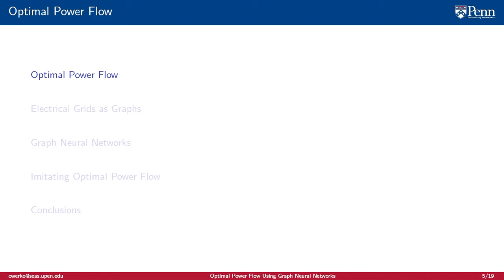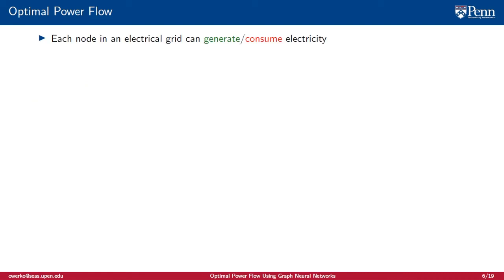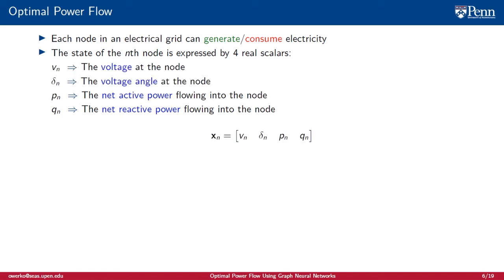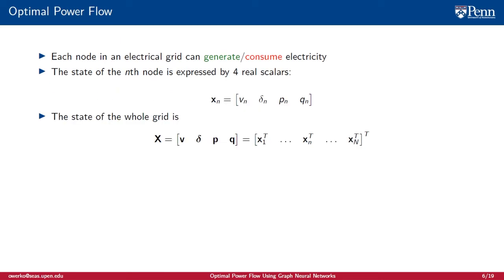First, let's define optimal power flow. Each node in the grid can generate and consume electricity. We can express the state of each node using four variables: the voltage, voltage angle, the net active power, and the net reactive power. Thus, the state vector at each node is a four-vector. The state of the whole grid is described by the n by four state matrix. The state of each node is a row in the state matrix.